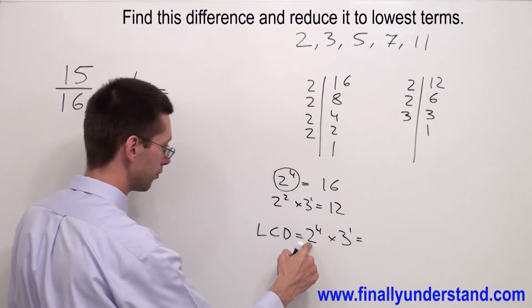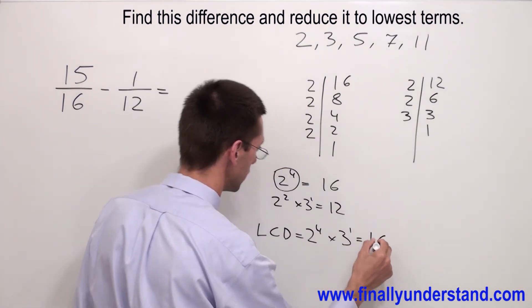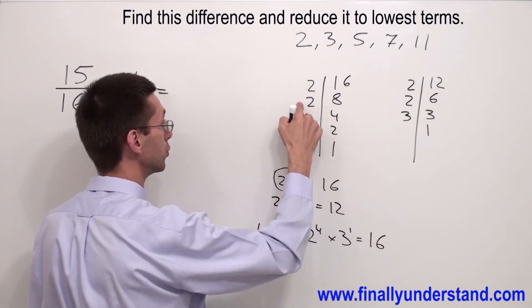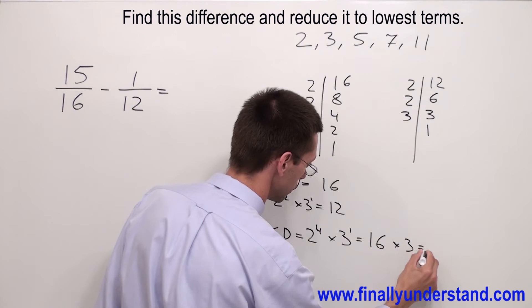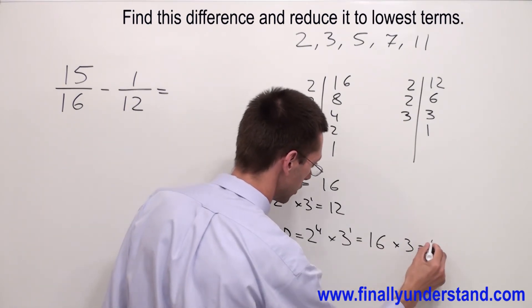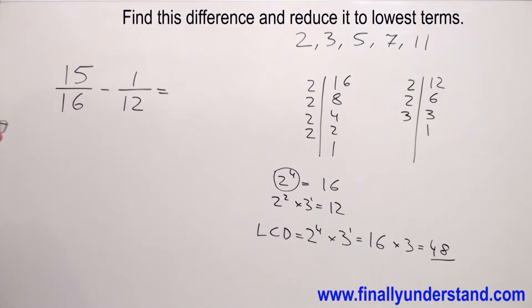So I have 2 to the 4th power. 2 to the 4th power is 16 because 2 times 2 times 2 times 2 is 16 times 3. 16 times 3 is 48. Okay, this is my common denominator.